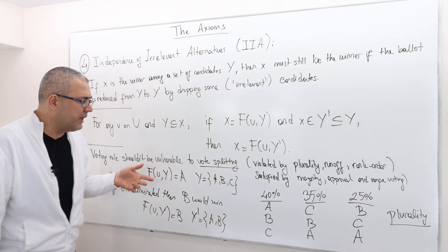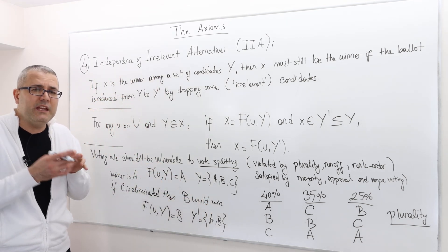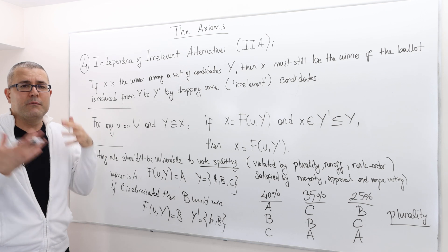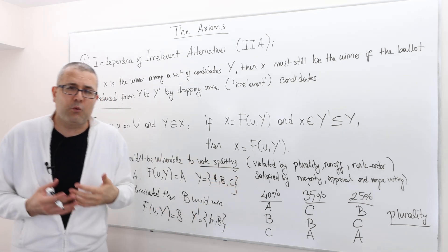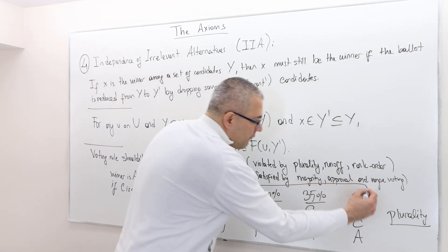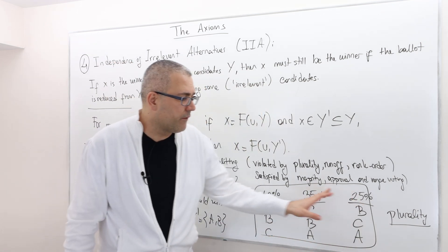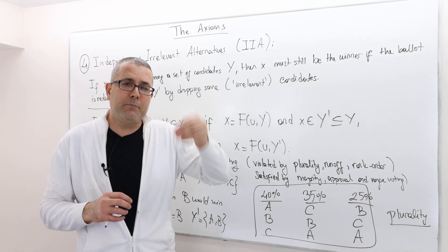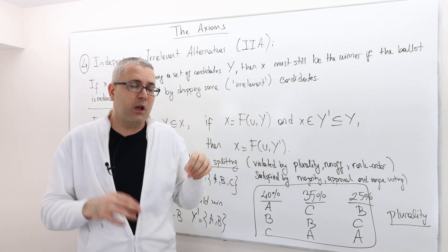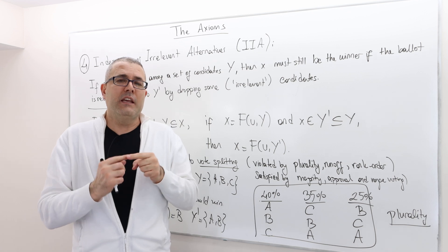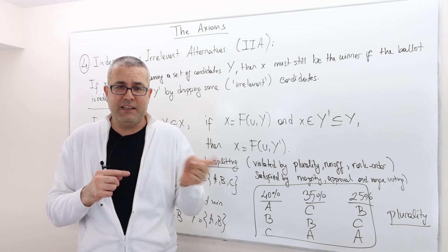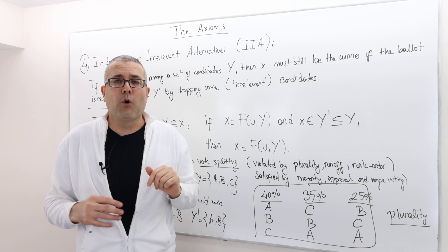You see what I mean? So it violates independence of irrelevant alternatives because as we eliminate some of the alternatives, the outcome, the voting outcome changes. Why is that? This is the situation that we call vote splitting. What's happening here? If you look at it, 60% of the voters are actually preferring both B and C over A. So A is actually, in this picture, a Condorcet loser. If A is racing head-to-head with candidate B or candidate C, A would lose. So A is a Condorcet loser.